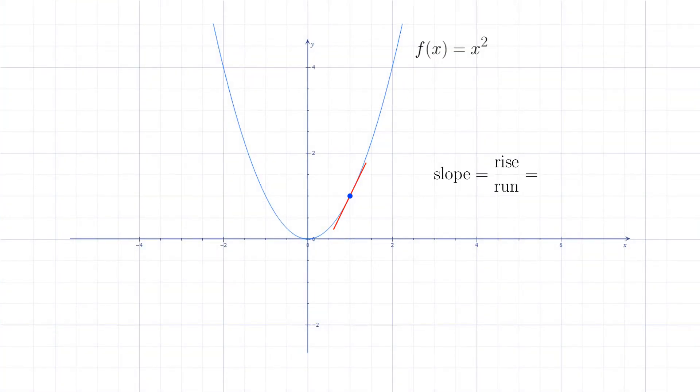In general, we can always use the two coordinates (x, f of x) and (x plus h, f of x plus h) to calculate the slope. The vertical displacement between those two points is always equal to f of (x plus h) minus f of x. The horizontal displacement is always equal to (x plus h) minus x, or just h.